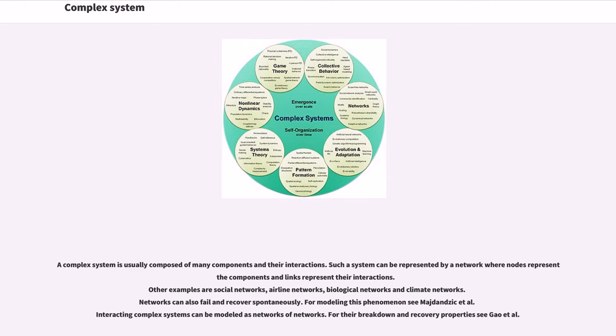A complex system is usually composed of many components and their interactions. Such a system can be represented by a network where nodes represent components and links represent their interactions. Other examples are social networks, airline networks, biological networks and climate networks. Networks can also fail and recover spontaneously. For modeling this phenomenon, see Majdandzic et al. Interacting complex systems can be modeled as networks of networks. For their breakdown and recovery properties, see Gao et al.